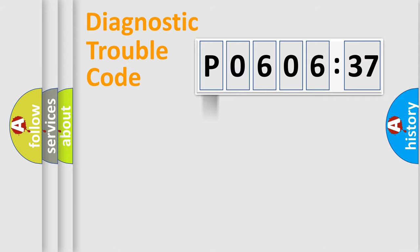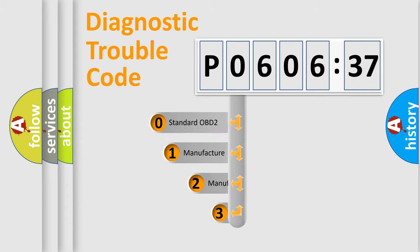Powertrain, Body, Chassis, and Network. This distribution is defined in the first character code.